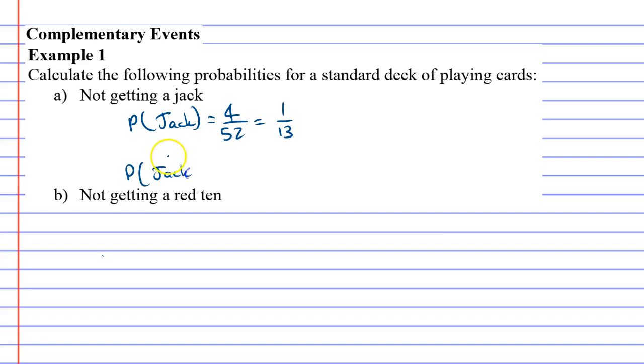not getting a jack, which is jack with a line above it (its complement), would be 12 over 13, because the probability of something plus the probability of its complement should add up to equal one.